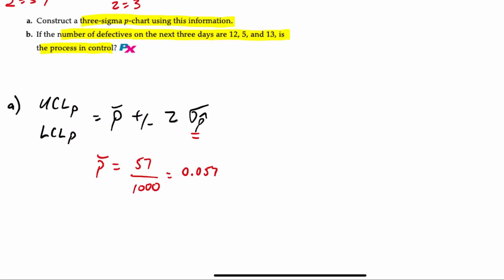Next, we know that the standard deviation of the sample proportions is equal to the square root of p-bar times 1 minus p-bar divided by n.